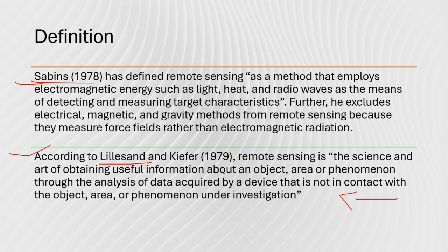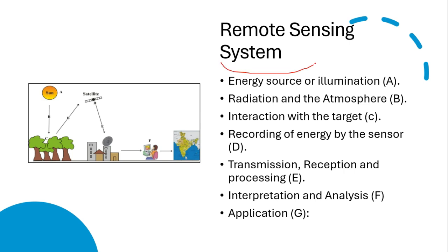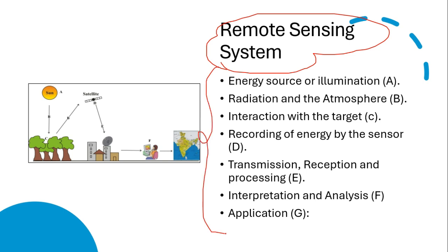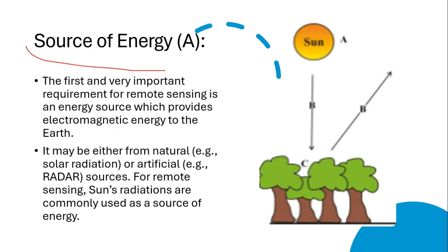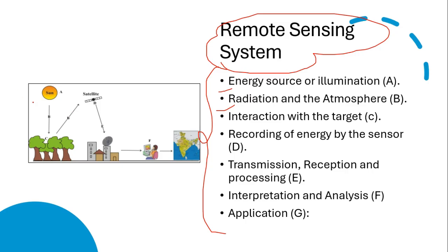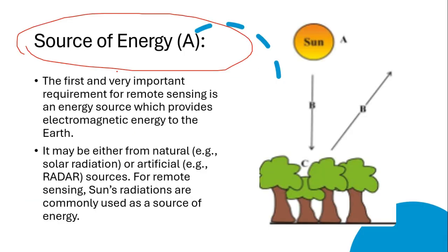Scientists like Sabins, Lillesand, and Kiefer also provided definitions for remote sensing. I will share this PDF in my Telegram channel from where you can learn more about these definitions. Moving forward to the remote sensing system — there are seven steps involved in remote sensing systems, from source of energy to final information.